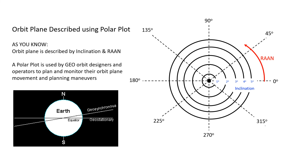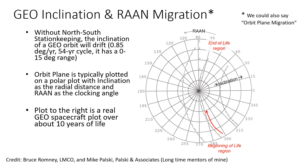Here's a real polar plot example of a satellite that flew a while ago, provided by Bruce Romney and Mike Powski. It started out at 300 degrees RAAN at 5 degrees inclination — you can see the beginning-of-life region. Then over about 10 years it migrated, moved through zero, and ended up in the end-of-life region where RAAN is now 75 degrees and inclination is back out to 5 degrees. Remember, it's a 54-year cycle — that motion was caused by the sun and moon's effect on the orbit plane.